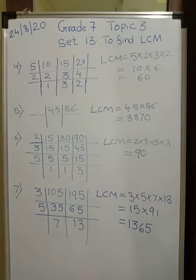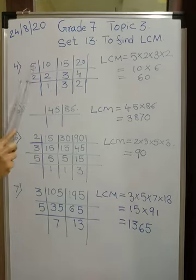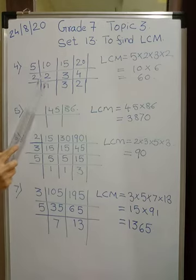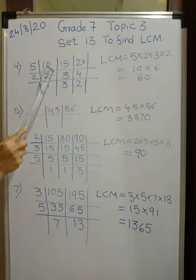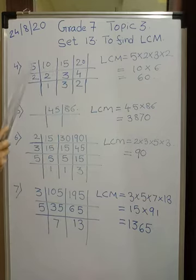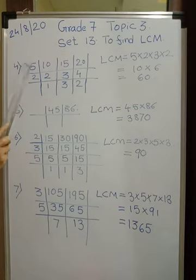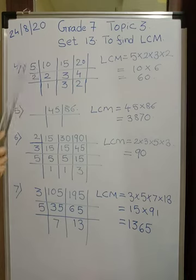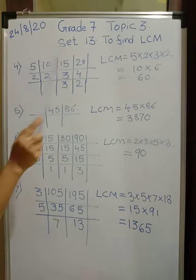Let's go to the fourth problem. The numbers are 10, 15, and 20. All these numbers are divisible by 5. We could start with 2 since 10 and 20 are divisible by 2, but at a glance, all 3 are divisible by 5, so I've chosen 5. Dividing gives 2, 3, and 4.